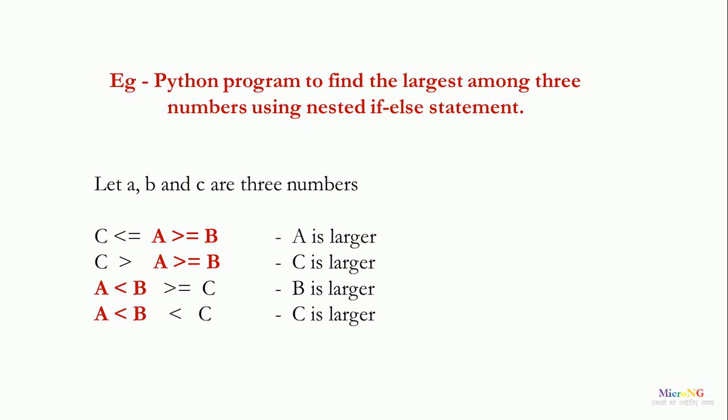If A is already greater than B but the second condition between A and C shows that C is larger, then C is the larger number. When the first condition — comparing A and B — becomes false, that means A is less than B. When A is less than B, B is already greater than A, so we check the condition of B with C: whether B is greater than or equal to C. If B is greater than A and also greater than C, then B is the larger number. In the else part, if C is more than B, then C is the larger number.